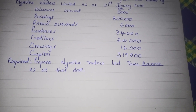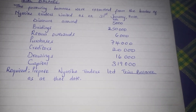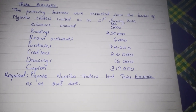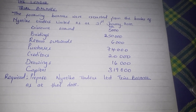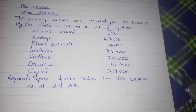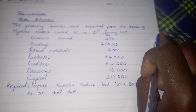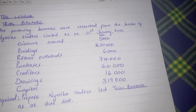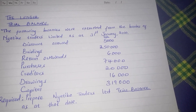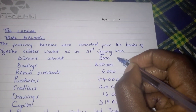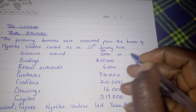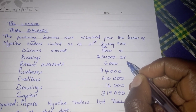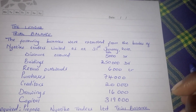Before we move on to preparing a trial balance, it's good we analyze whatever information you're given. To start with, we have discounts allowed. Discounts allowed usually have a debit balance, therefore on the trial balance you're also going to debit. Buildings is also an asset, so debit balance.